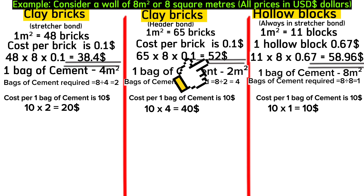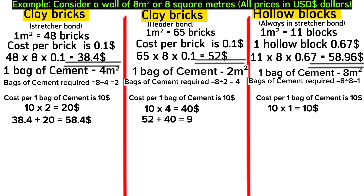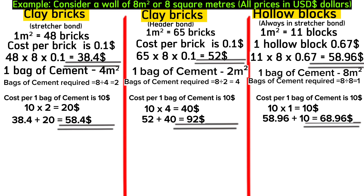Adding cement cost to material cost: stretcher bond is $38.40 + $20.00 = $58.40; header bond is $52.00 + $40.00 = $92.00; hollow blocks are $58.96 + $10.00 = $68.96. Bricks in header bond are the most expensive. Also remember, the more cement you use, the more sand you also use.